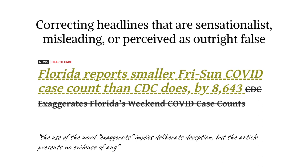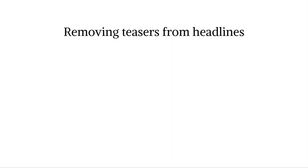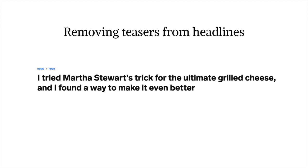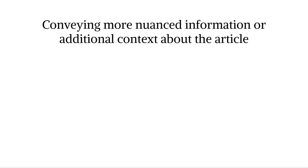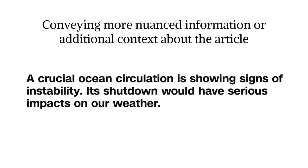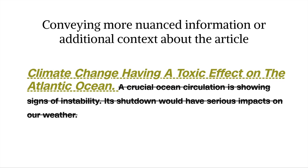Participants also corrected teasing headlines, or those that were clickbait and teased the user about their lack of knowledge. Here's an example: hiding that the secret ingredient to making Martha Stewart's grilled cheese better is butter. A frequently applied change was to convey more nuanced information or additional context about the article that the user thought was important. Conversely, some users omitted details they thought were unnecessary.